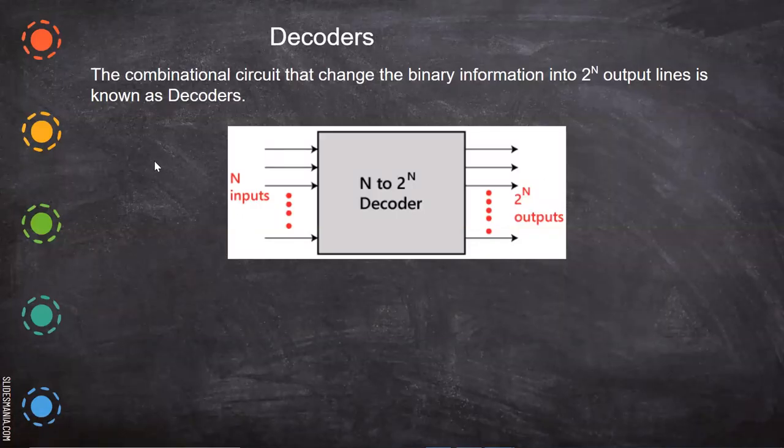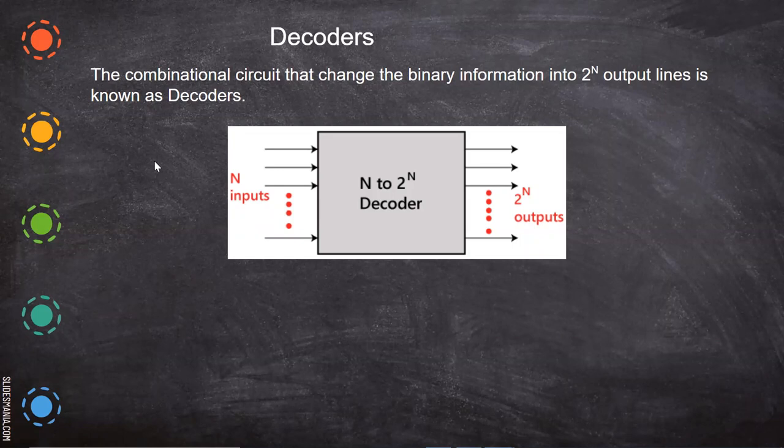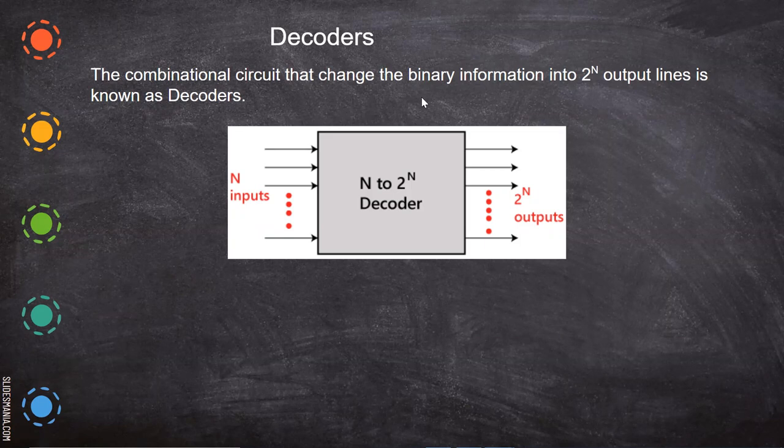In this video, we are going to see about the decoders. This is also one of the combinational logic circuits. This changes the binary information into 2 power n output lines. See here, there are n number of lines and you will get 2 power n lines.